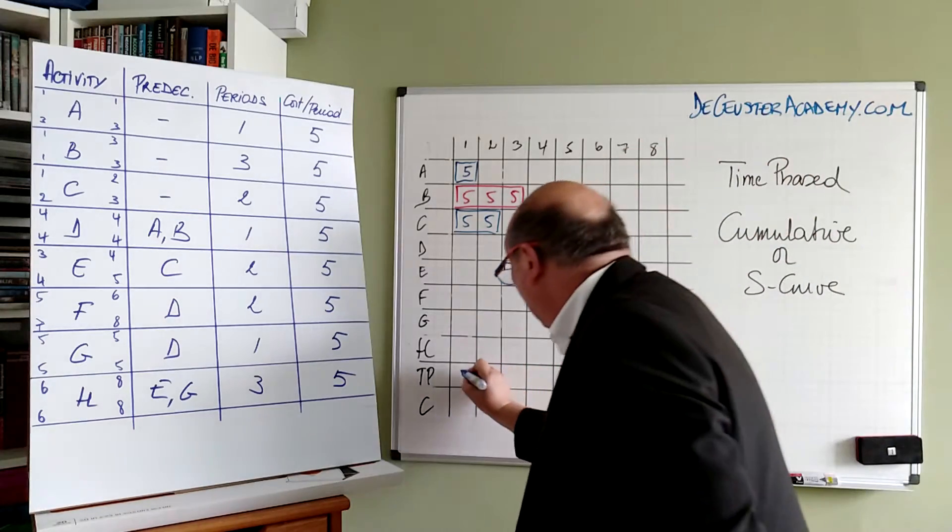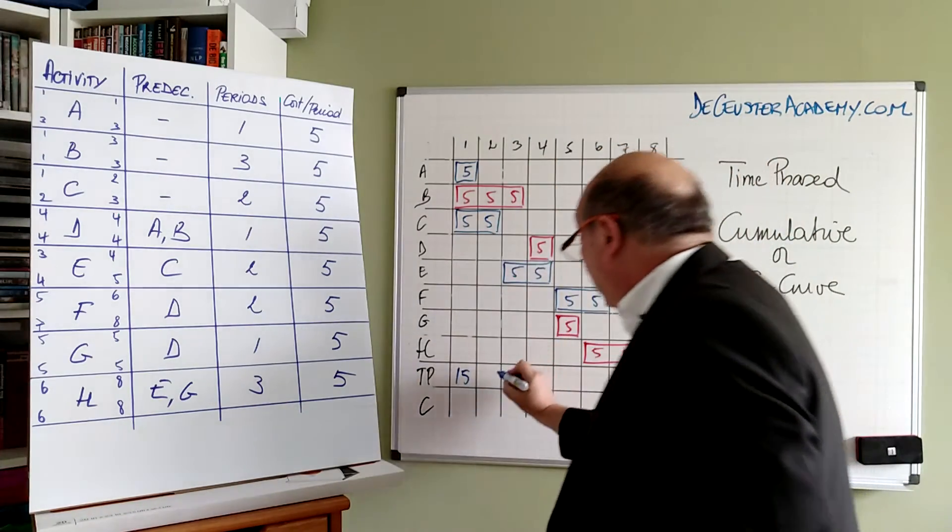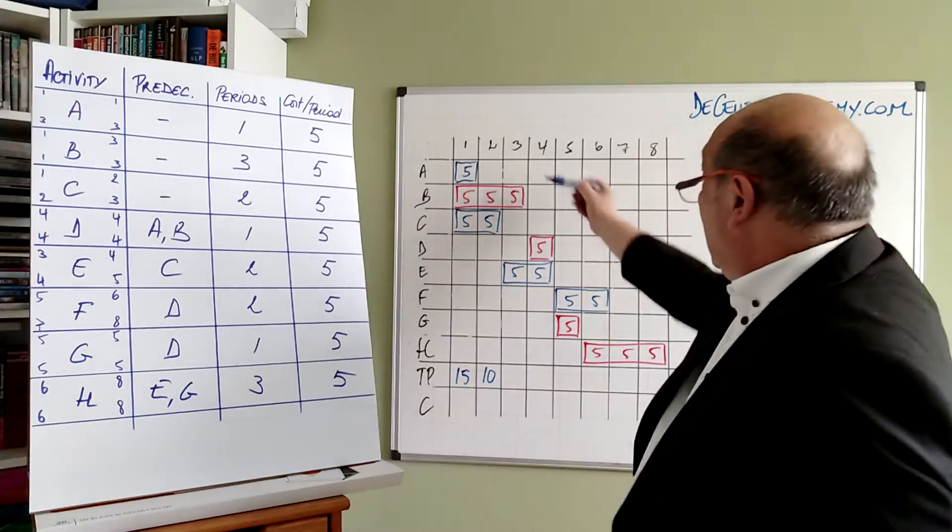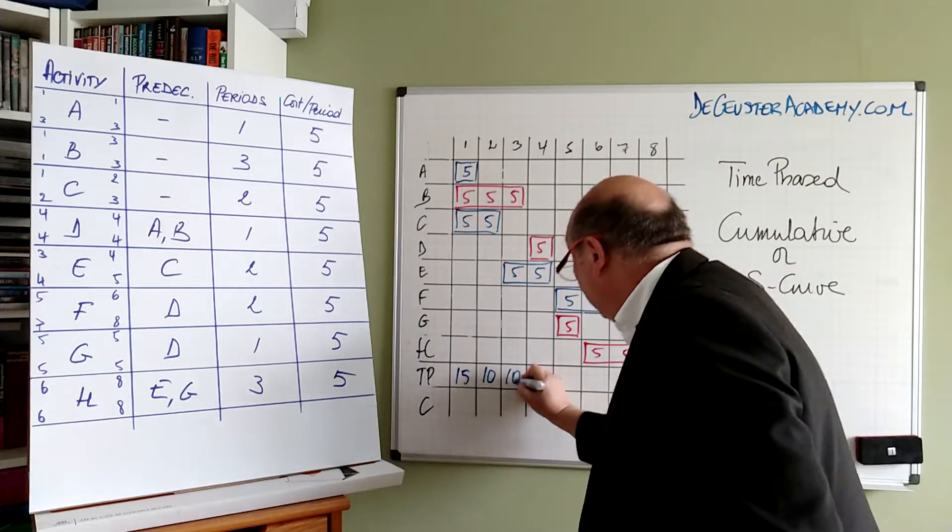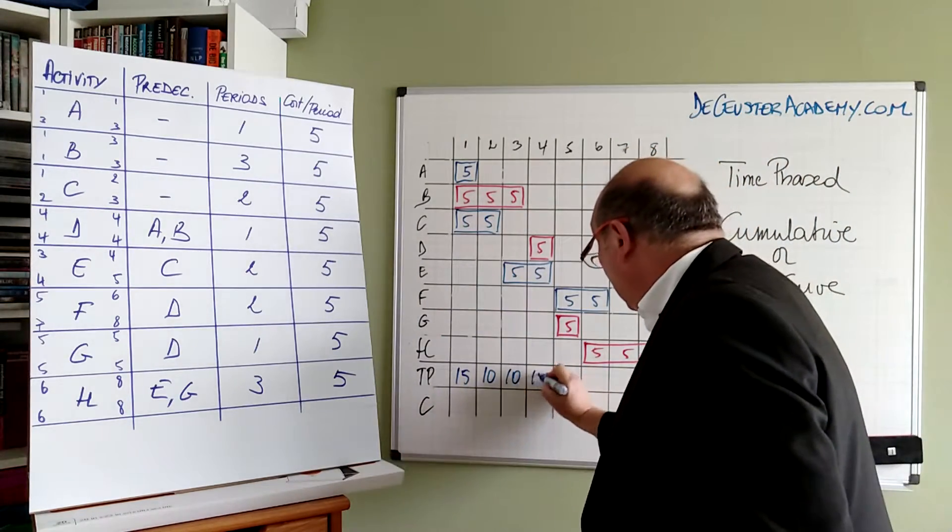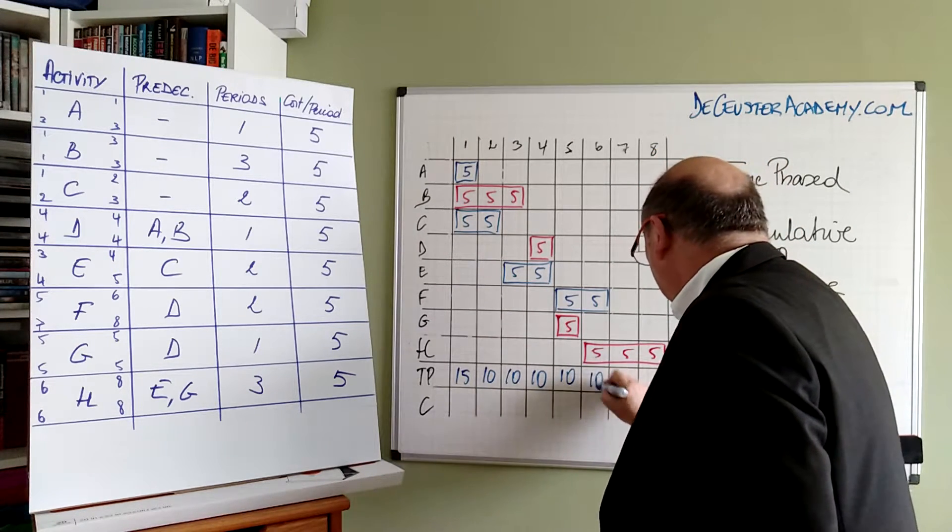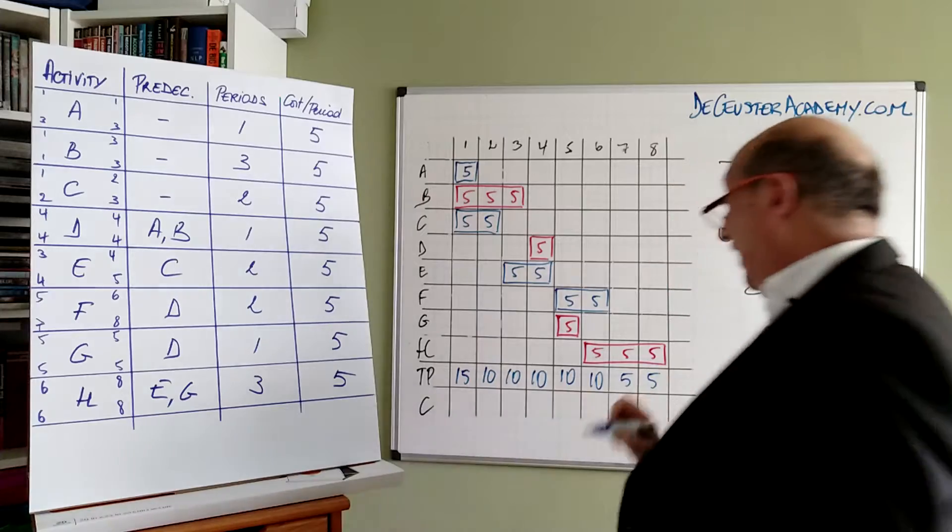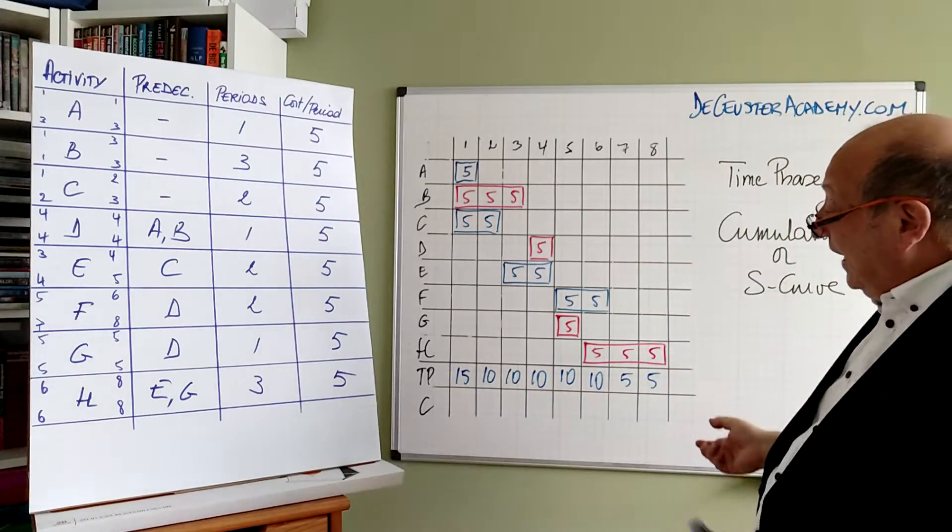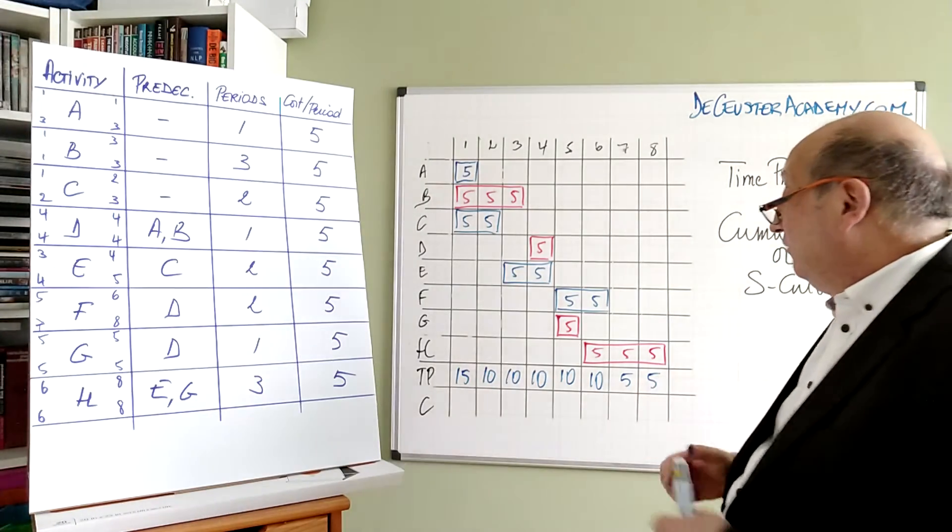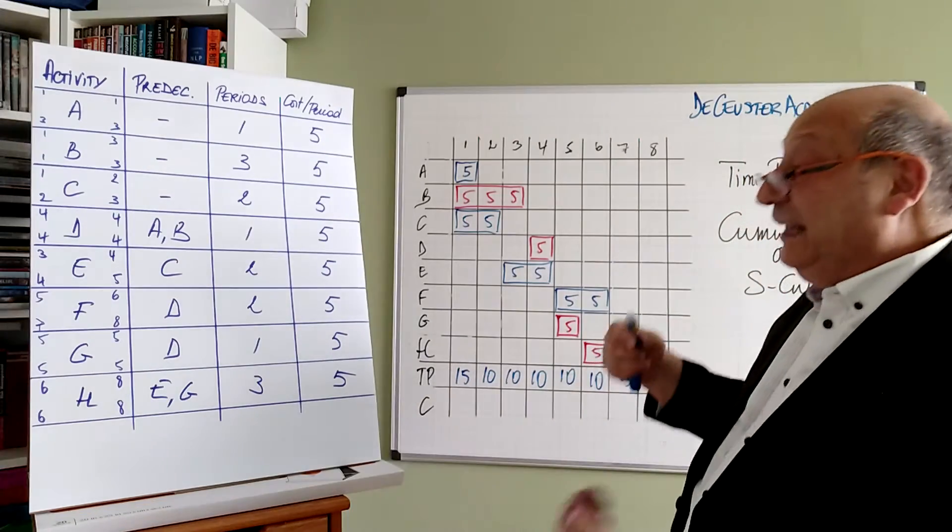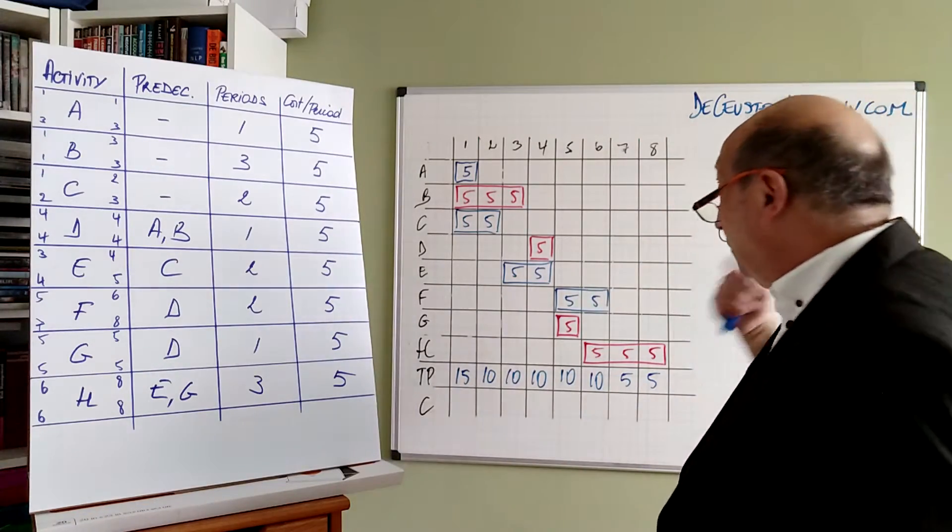So here I have 15, here I have 10, here I have 10, here I have 10, 10, 10, 10, 5, and finally 5. Now I can calculate the cumulative budget where I'm adding the new period to all the previous ones.